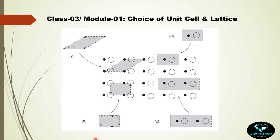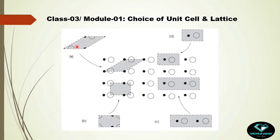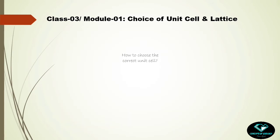A third option uses one complete motif cumulatively: half of a black dot plus four corners each with one-fourth of an open circle, totaling one complete motif with surrounding empty space. A fourth, more complex choice uses two half open circles and two half black dots, again constructing one motif in total cumulatively. These are the four choices of unit cells, and the question is which is the most prominent and correct choice.